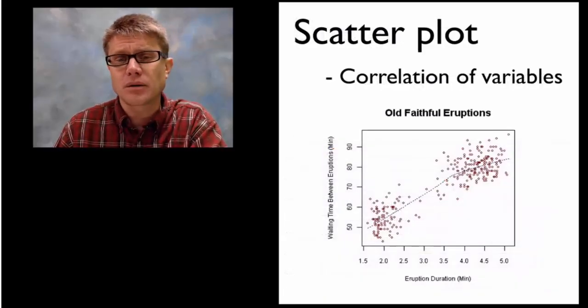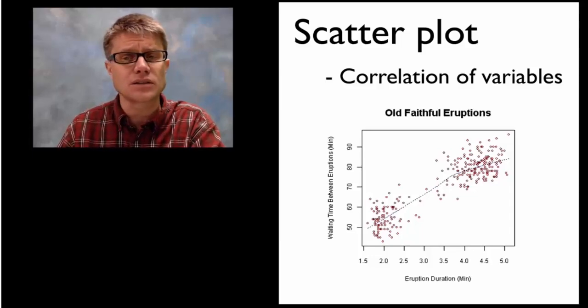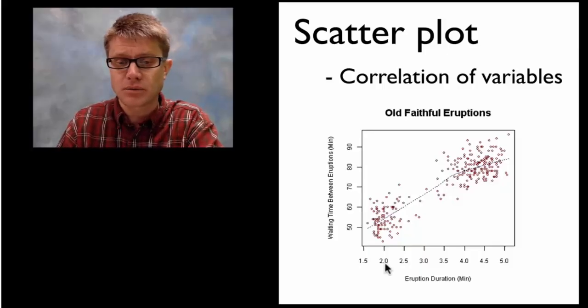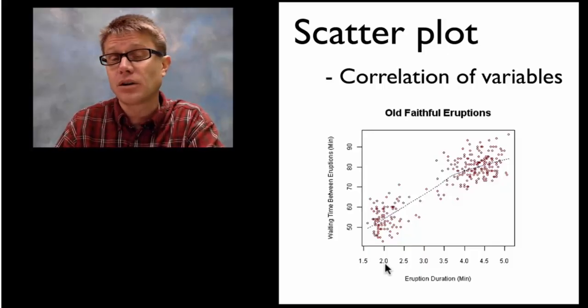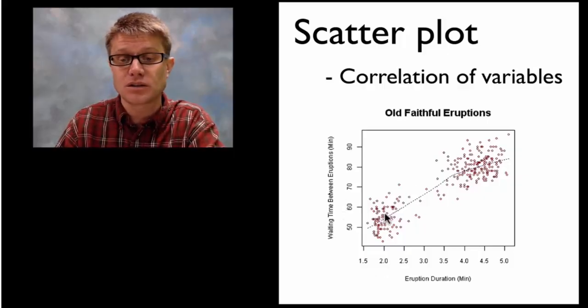Let's say we're looking at a scatter plot. We're going to use that when we're correlating two number sets or two sets of data. So it's a correlation of variables. This scatter plot right here they're looking at the eruption of old faithful, how long that eruption takes, and then the time between the eruptions. And you can see that there's a relationship between those two.